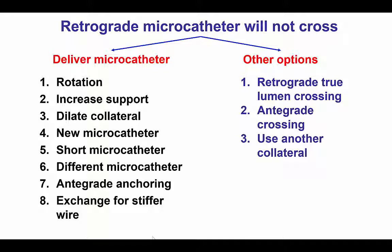However, the challenge we subsequently had was that the Caravel would not cross the septal. This is a not uncommon situation that can be approached in different ways. The first is to try hard to deliver the microcatheter — for example, by rotating it, which was tried in our case but did not work — or by increasing support, which in its simplest form can be done by putting forward pressure into the left main guide. A third option is to dilate the collateral with a small 1.2 or 1.5 mm balloon at low pressure. If that doesn't work, we can use a new microcatheter: a shorter, maybe 135 cm, which has potentially better torque transmission, or a different type — for example, switch from a Corsair to a Caravel, or a Caravel to a Micro-14, although the Caravel is a fairly low-profile microcatheter.